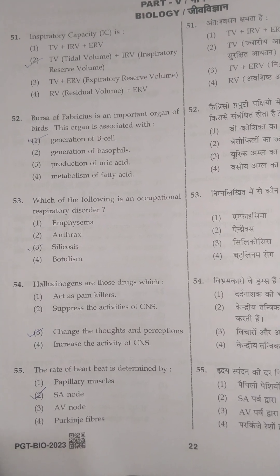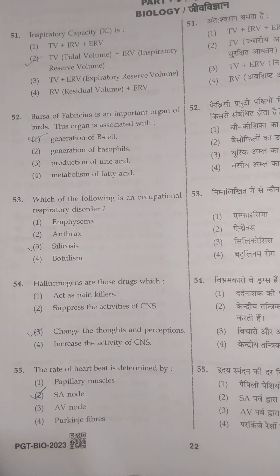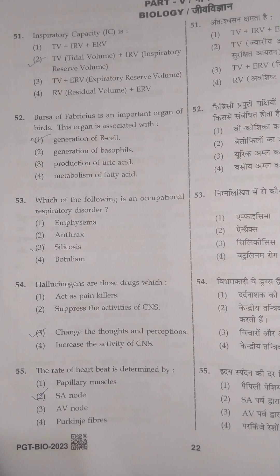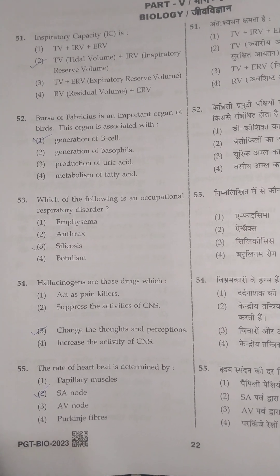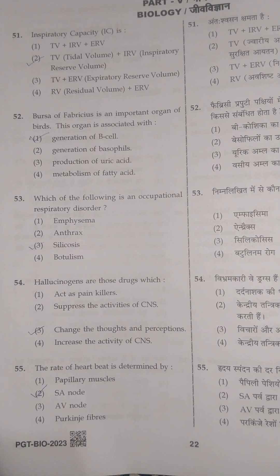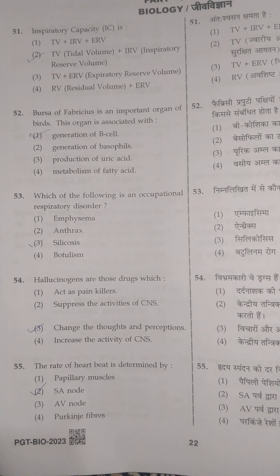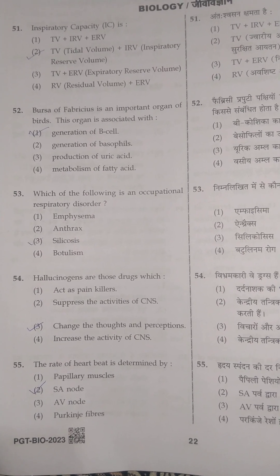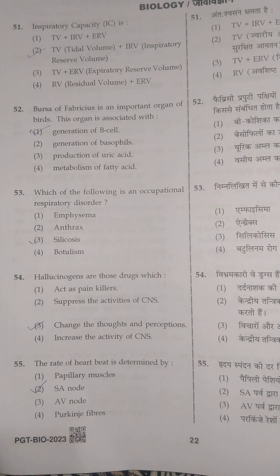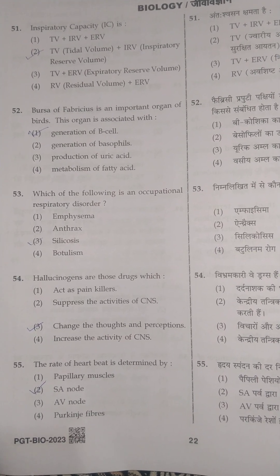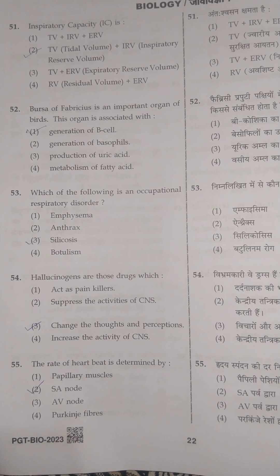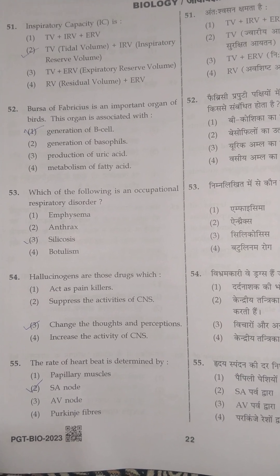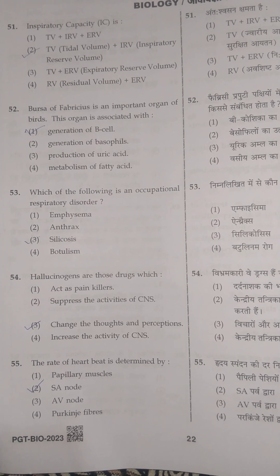The next question is: which of the following is an occupational respiratory disorder? Its correct answer is option 3: silicosis. The next question — hallucinogens are those drugs which: its correct answer is option 3, changes the thoughts and perceptions. The next question: the rate of heartbeat is determined by its correct answer, the sino-auricular node, that is the SA node.